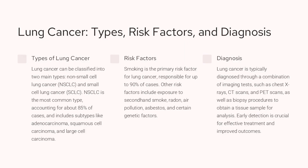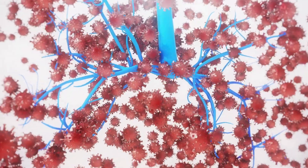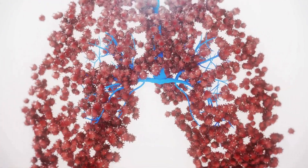Lung cancer is a serious disease with two main types: non-small cell lung cancer (NSCLC) and small cell lung cancer (SCLC). NSCLC is the most common type, accounting for about 85% of cases, and includes subtypes like adenocarcinoma, squamous cell carcinoma, and large cell carcinoma. Smoking is the primary risk factor, responsible for up to 90% of cases. Other risk factors include exposure to second-hand smoke, radon, air pollution, asbestos, and certain genetic factors. Lung cancer is typically diagnosed through imaging tests like x-rays, CT scans, and PET scans, as well as biopsy procedures. Early detection is crucial for effective treatment and improved outcomes.